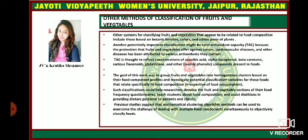Other methods of classification of fruits and vegetables that appear to be related to food composition include those based on botanical families, color, and edible part of plants. Another potentially important classification might be total antioxidant capacity, because the protection that fruits and vegetables offer against cancer, cardiovascular diseases, and other diseases has been attributed to various antioxidants they contain. Total antioxidant capacity is thought to reflect the concentration of ascorbic acid, alpha-tocopherol, beta-carotene, and various flavonoids.